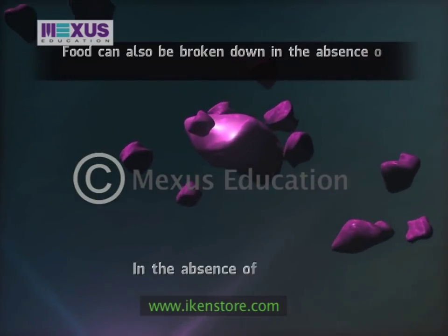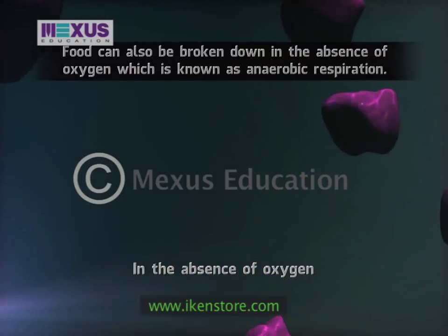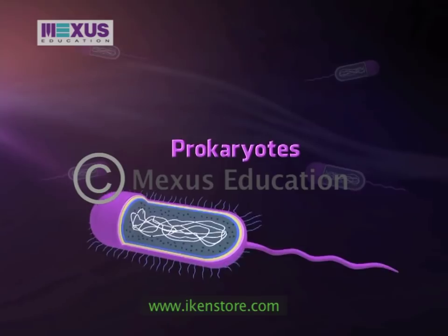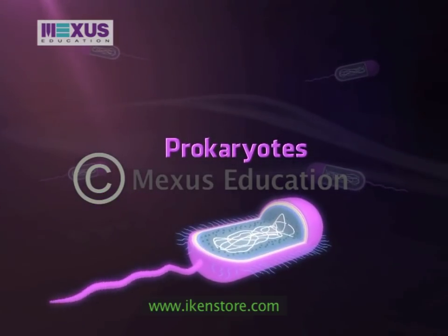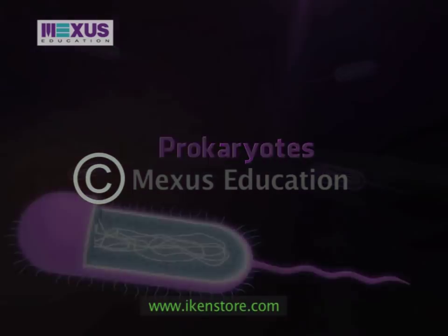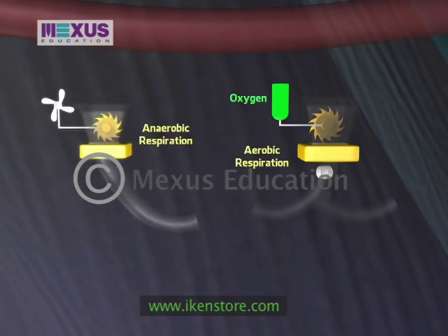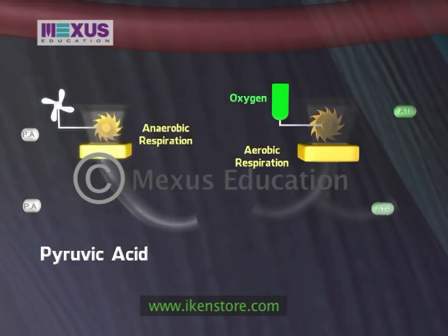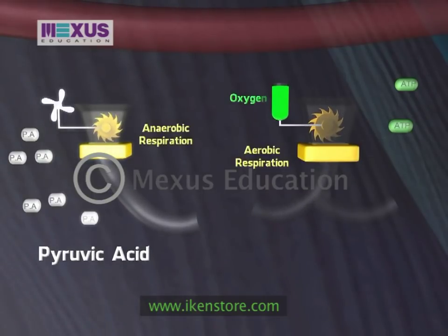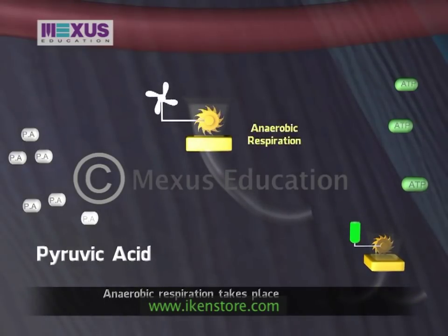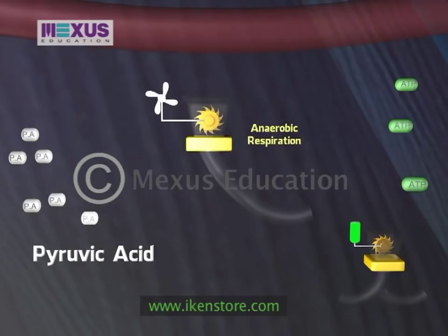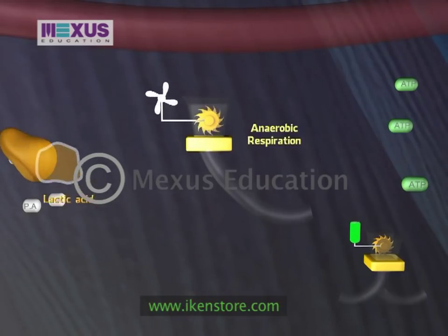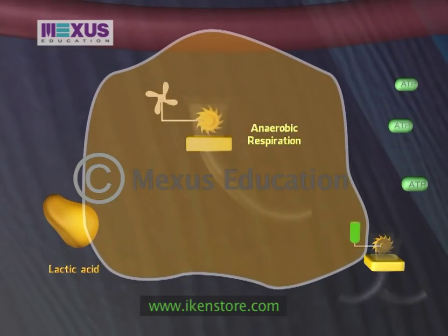Food can also be broken down in the absence of oxygen, which is known as anaerobic respiration. This happens mostly in prokaryotes, which are single-celled organisms living in environments devoid of oxygen. Our muscles can also respire anaerobically during high-intensity exercise like cycling or weightlifting, when the demand for energy is high but the supply of oxygen is limited. This results in the production of lactic acid from pyruvic acid, and a high concentration of lactic acid might impair the muscles, leading to cramps.